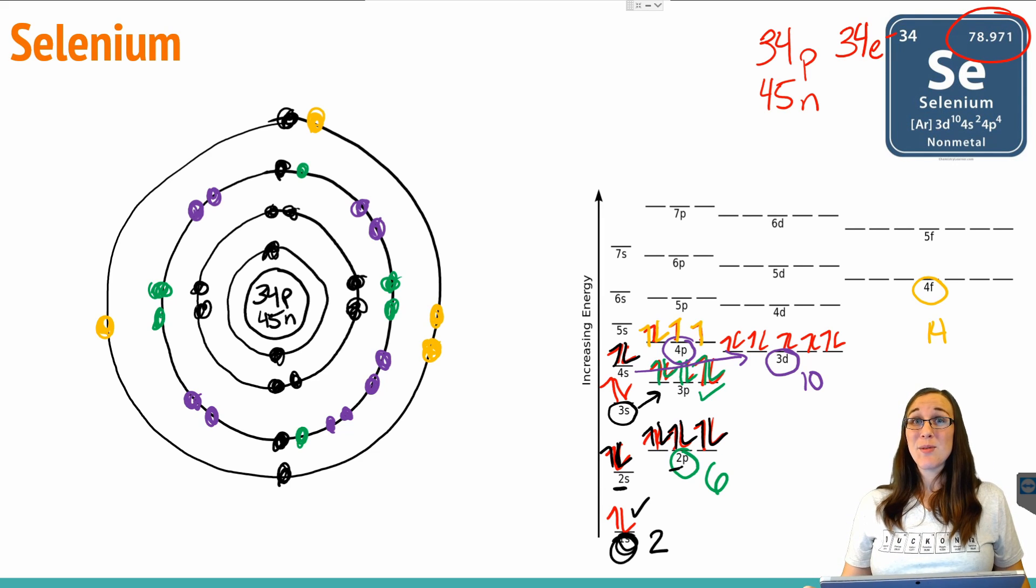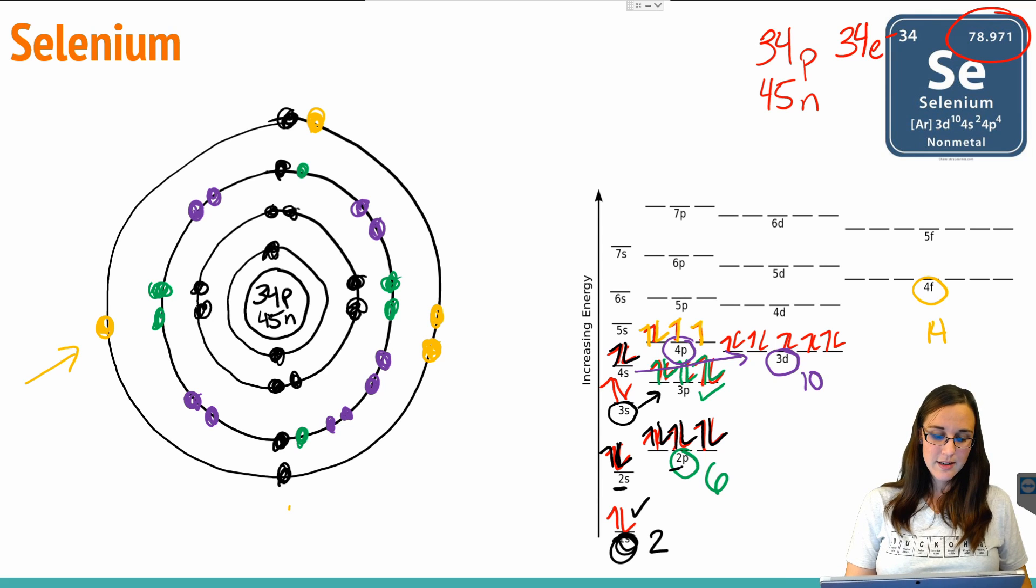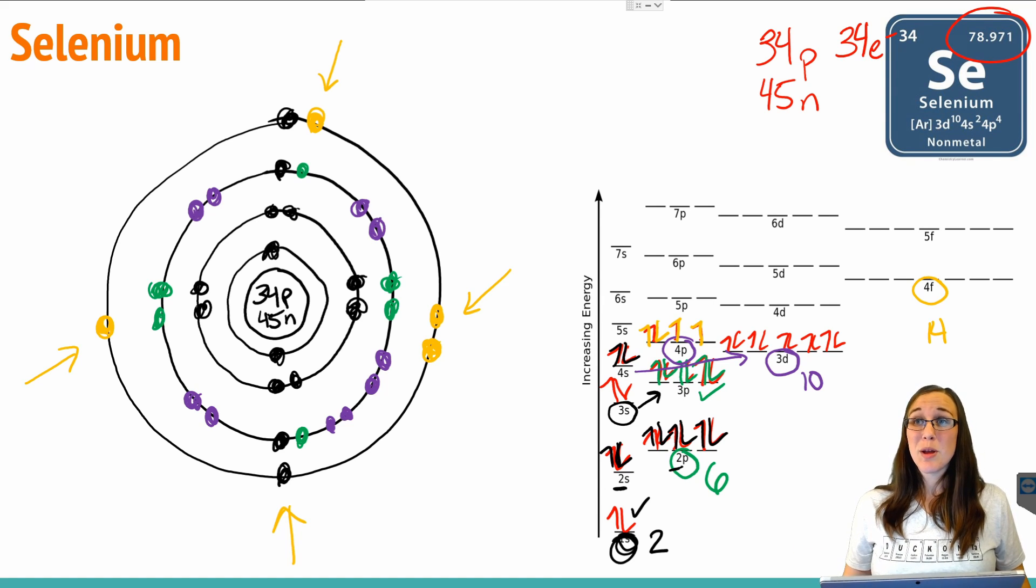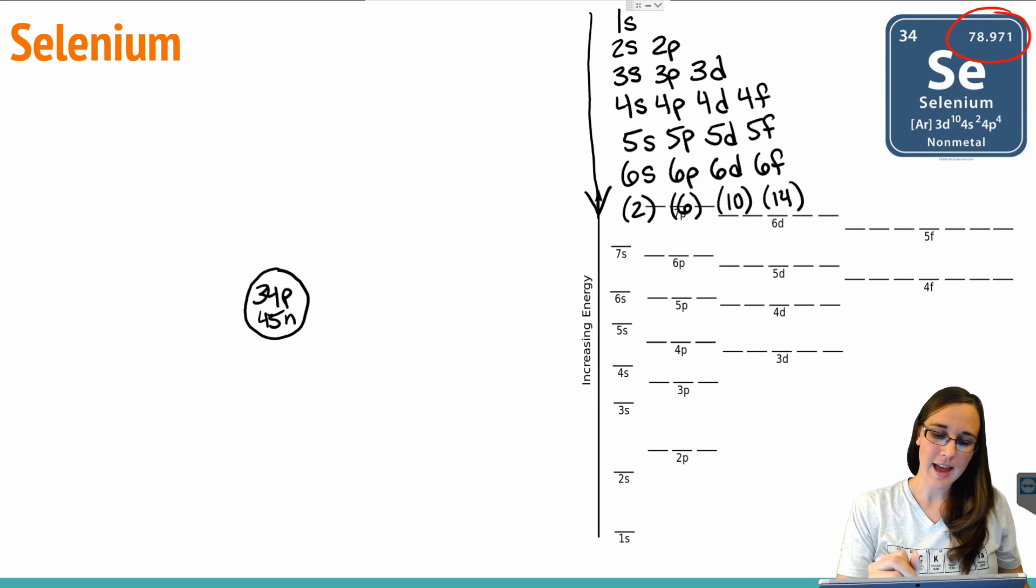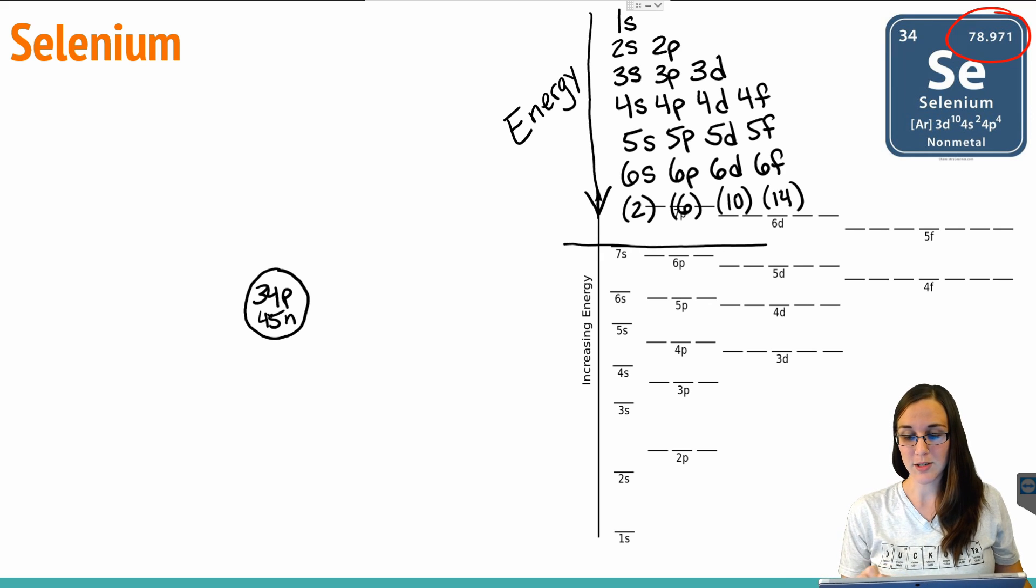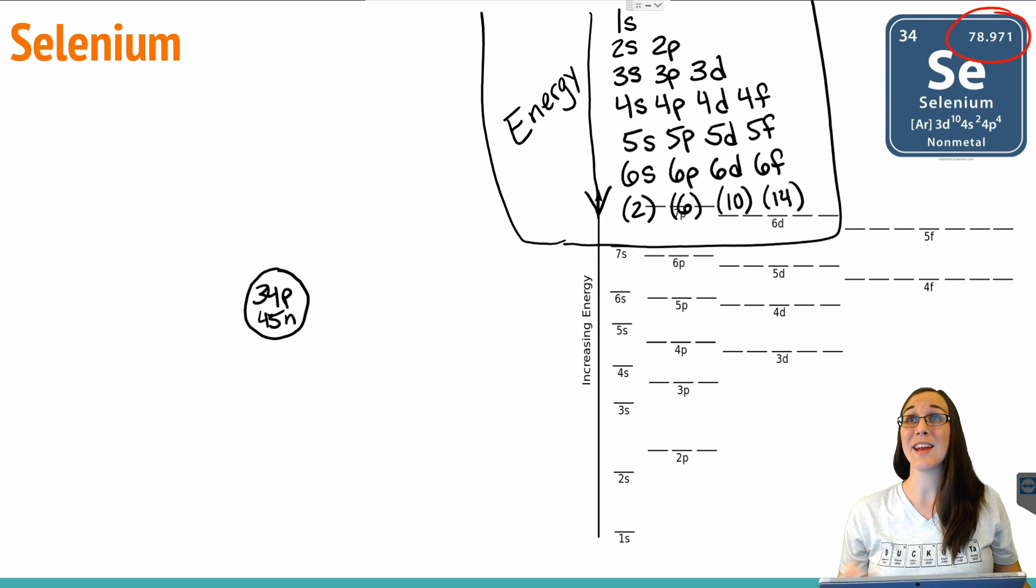So we've now got 10 electrons back in the third shell. Now we have to jump to 4 again, our fourth shell, and put in our last number of electrons. We have 4 electrons in 4p, so now we're going back to the fourth shell and putting in an additional 4. What we can see is that we have two unpaired electrons in the outermost valence shell. We have two sets that are paired, and that'll help us determine whether selenium would want to gain or lose electrons.